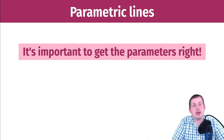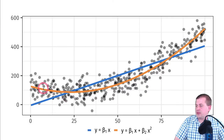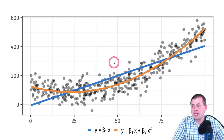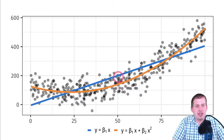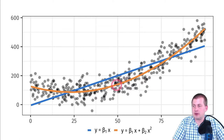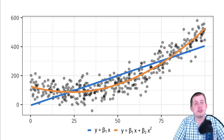It's important that you get the parameters right — having enough squared, cubed, and other terms so that the line fits the data. If the line doesn't fit well, you'll get weird results. For example, the orange line with an x-squared term fits a curved dataset well, while the blue straight line does not. If we put a discontinuity at 50 with the blue line, the gap will be wrong because the line isn't fitting the data properly.